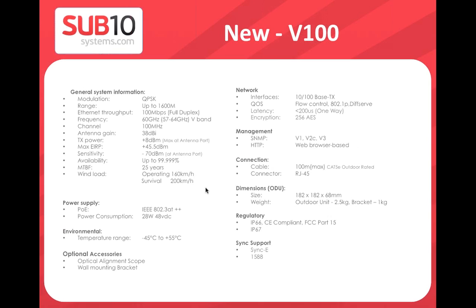We're working to reduce power consumption, but more functionality requires more processing power. Temperature range is standard: -45°C to +55°C. An optional accessory is the optical alignment scope, useful especially when you're new to millimeter wave systems or when deploying many links. It reduces installation and commissioning time by ensuring antennas are properly oriented.